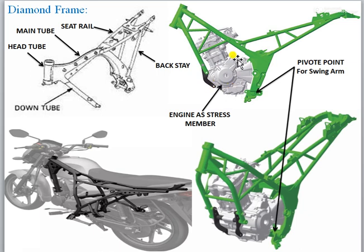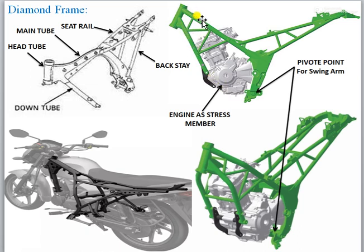Now, why do we call it a diamond frame? If you look at it, it has four sides: first side, second side, third side, and fourth side. Edge one, edge two, edge three, and edge four. The engine is treated as link four, with link one, link two, and link three. So four links come together to generate the shape of a diamond — that is why it is called a diamond chassis or diamond frame.